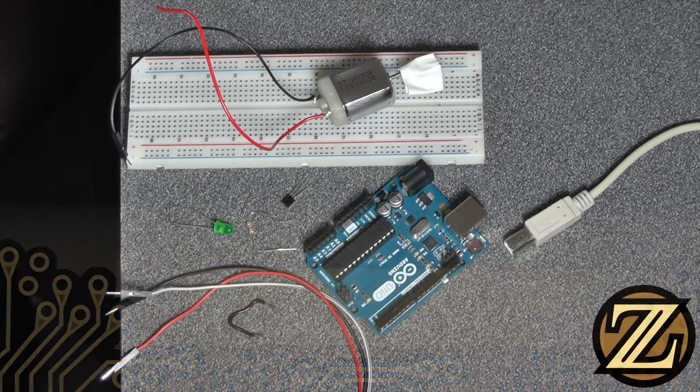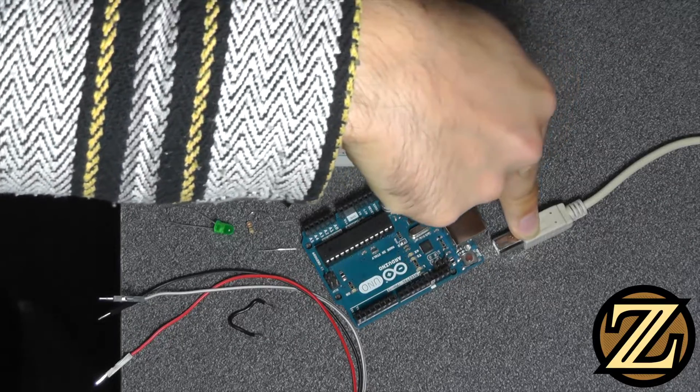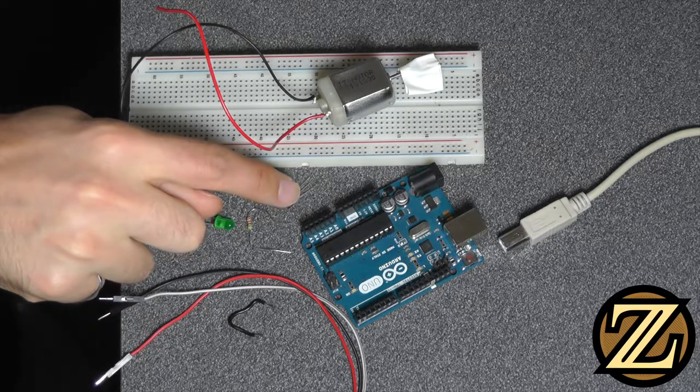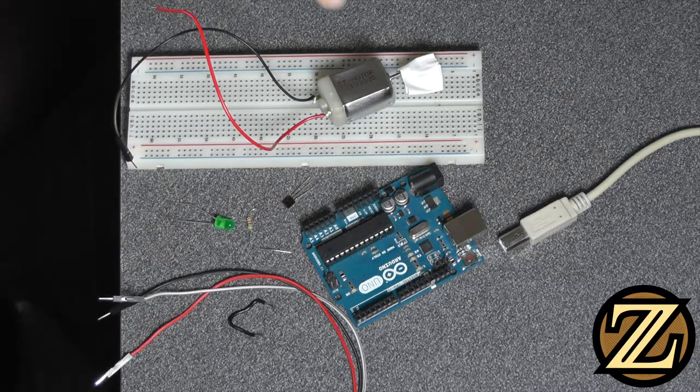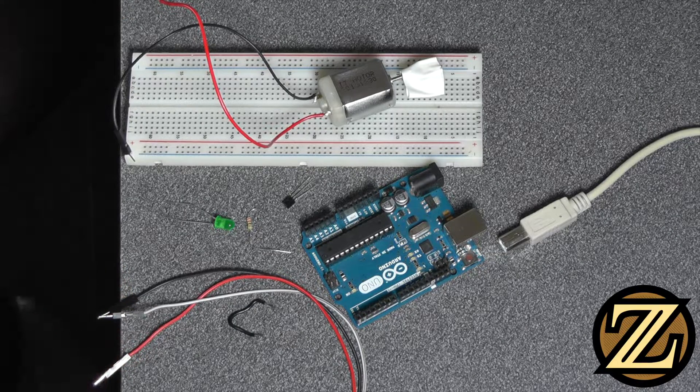What you're going to need to complete this tutorial is an Arduino Uno, a cable to bring the Uno to your computer, an LED, a resistor, an NPN BJT transistor, the brushed motor of course, a breadboard, and some wires to bring it all together.